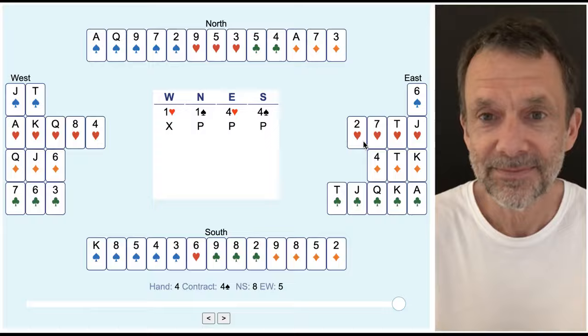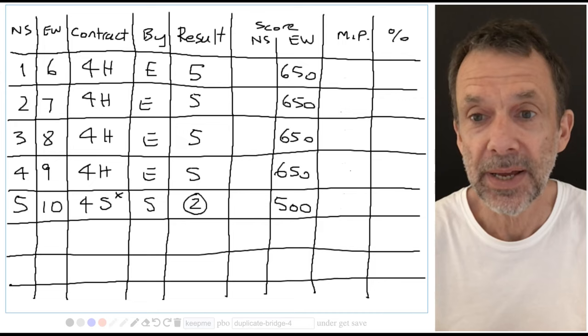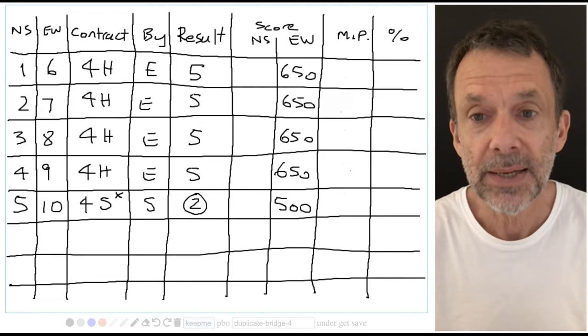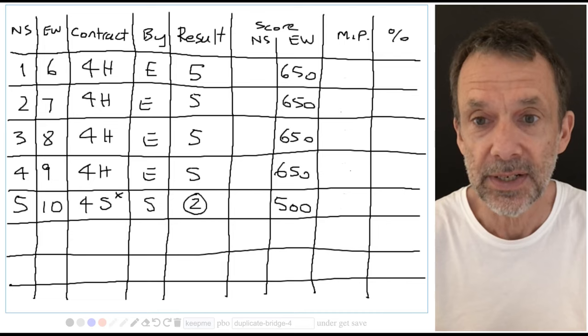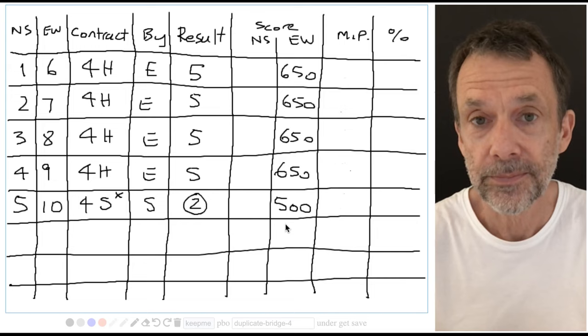Let's have a look at the score sheet. So here's our imaginary score sheet, and we can see that at four tables the contract was four hearts by east making five, seems fairly normal, for a score of 650 to east-west. And once again remember that 650 to east-west is exactly the same as minus 650 to north-south. Four tables minus 650, and here's us: four spades doubled down two, minus 500.